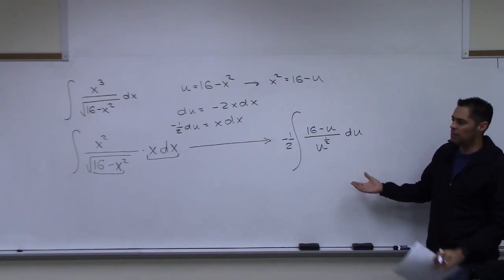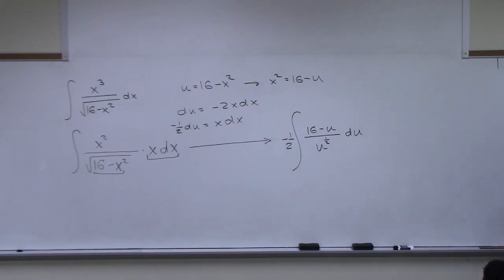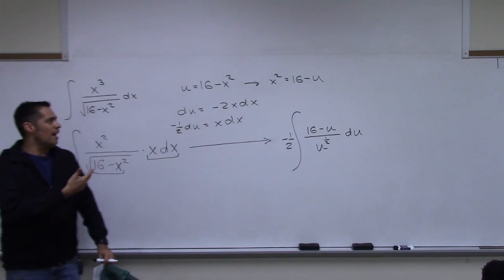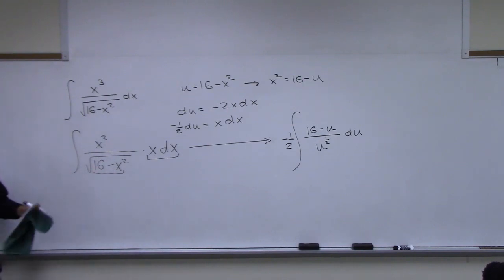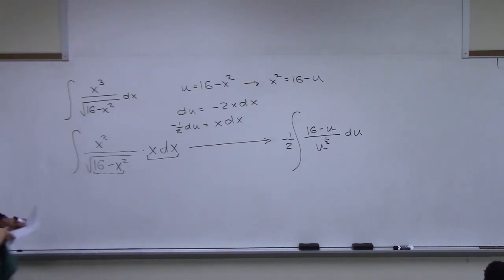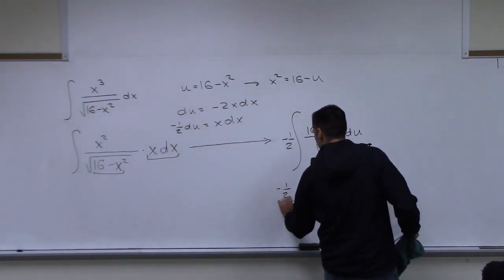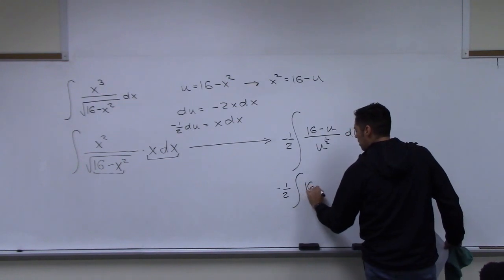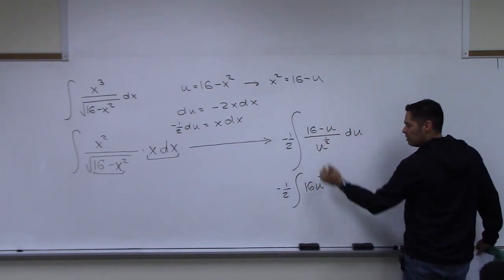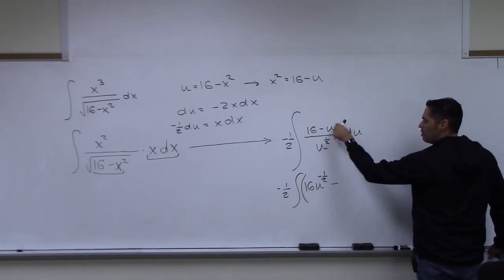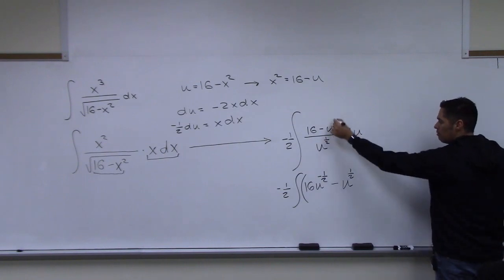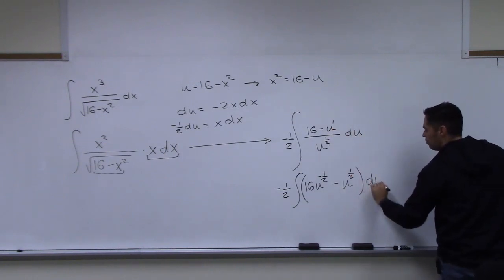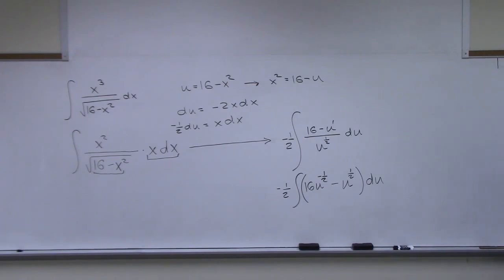That actually worked — not so bad. So negative one half times the integral of (16 u^(−1/2) minus u^(1/2)) du. Integrating term by term: the antiderivative of 16 u^(−1/2) is 32 u^(1/2), and the antiderivative of u^(1/2) is (2/3) u^(3/2).